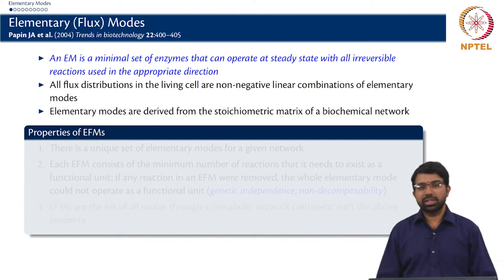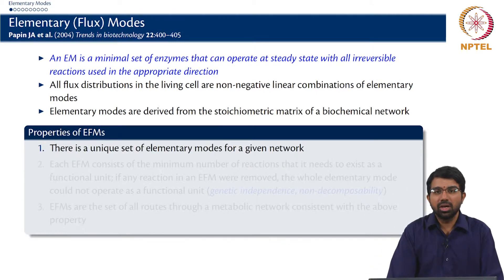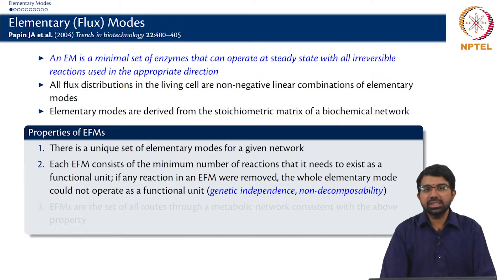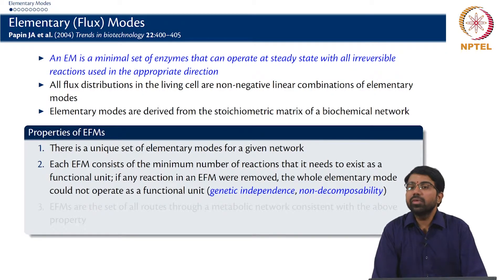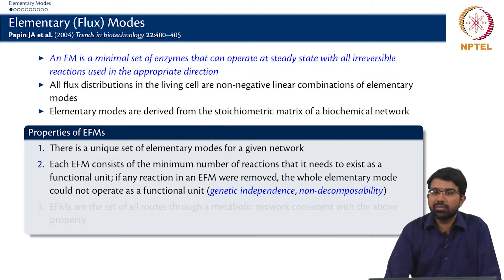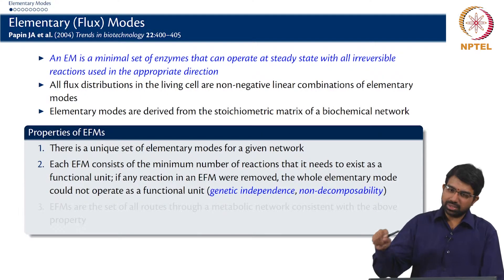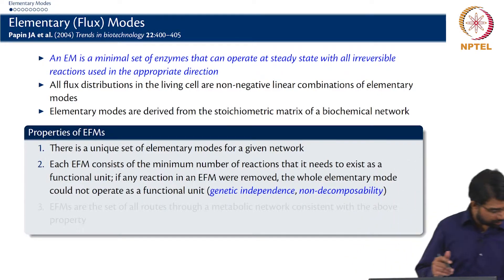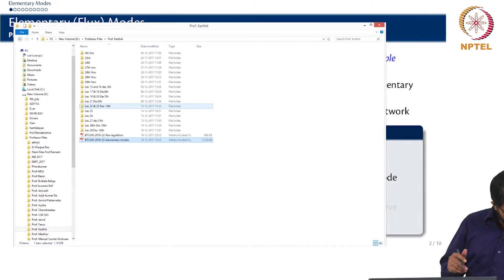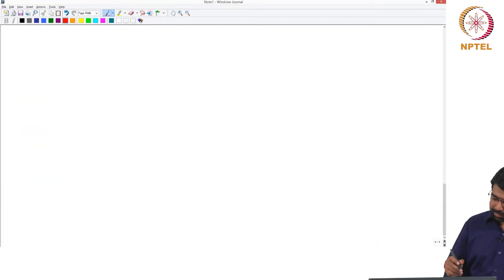What are the properties of EFMs? First, there is a unique set of elementary modes for a given network, and each EFM consists of the minimum number of reactions it needs to exist in steady state as a functional unit. By definition, if you remove any reaction from an EFM, the elementary mode cannot operate. So it is a sort of chain of reactions, and you can think of any cell as some combination of EFMs.